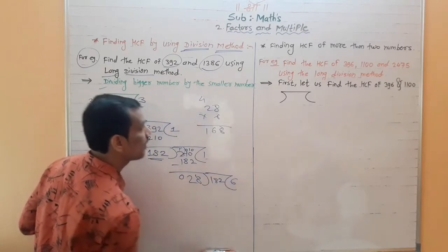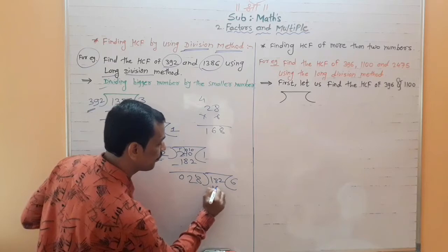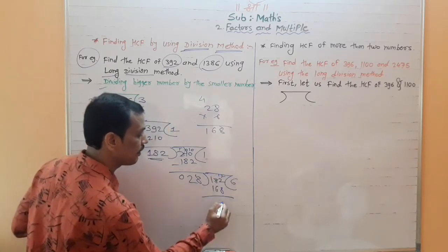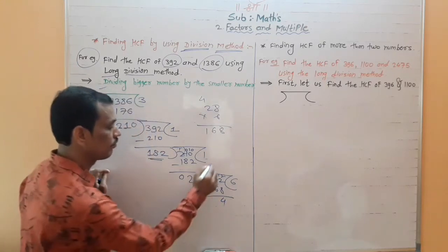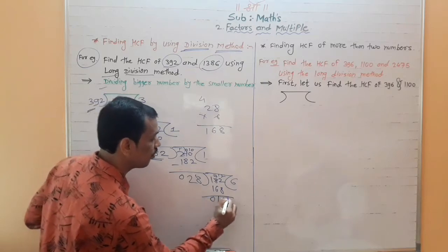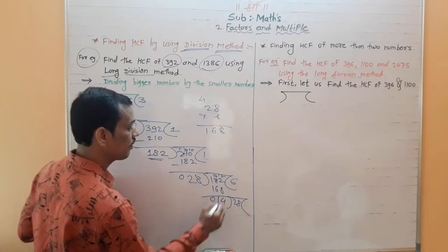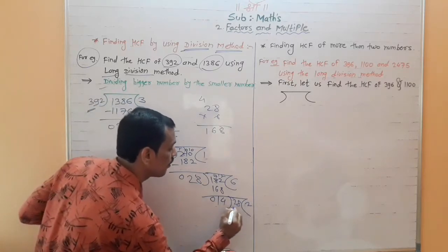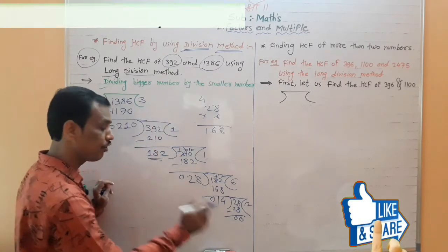Now divide 182 by 28. 182 into 6 gives 168. 12 minus 8 gives 4, 7 minus 6 gives 1, giving remainder 14. Now 28 divided by 14: 28 minus 28 gives remainder 0.